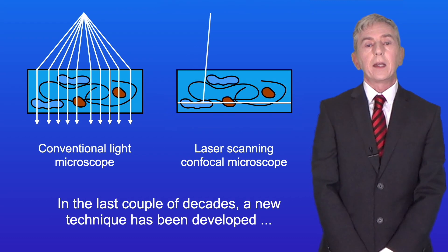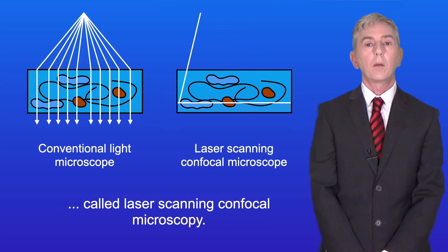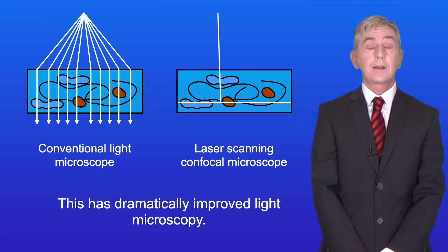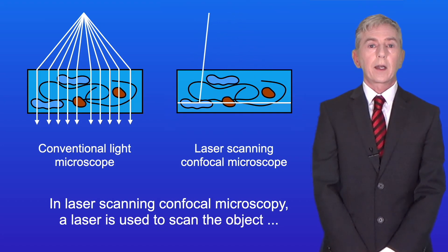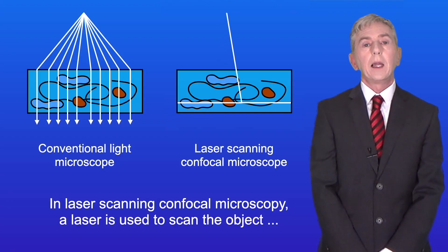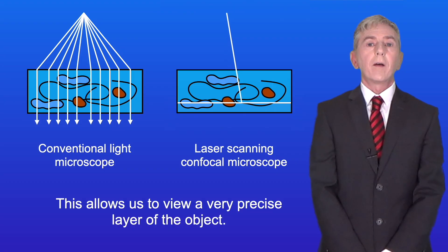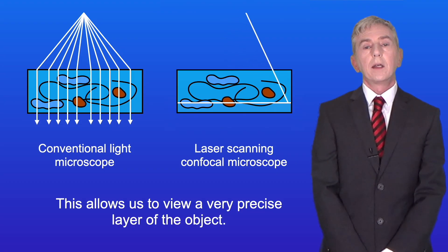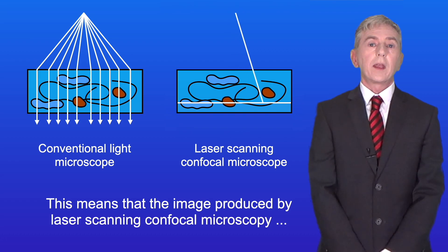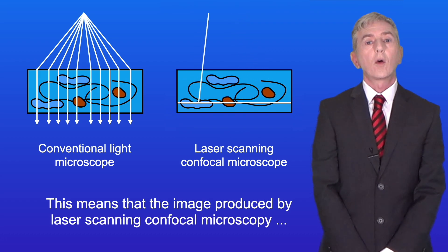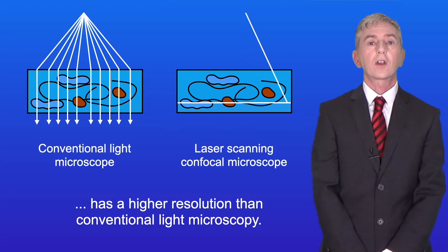In the last couple of decades a new technique has been developed called laser scanning confocal microscopy, and this has dramatically improved light microscopy. In laser scanning confocal microscopy, a laser is used to scan the object that we're interested in. This allows us to view a very precise layer of the object, as illustrated in this diagram. This means that the image produced by laser scanning confocal microscopy has a higher resolution than conventional light microscopy.